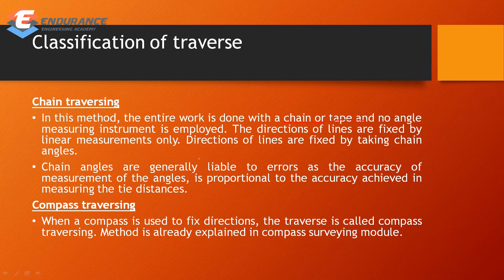In chain traversing, the direction of lines is fixed by taking chain angles — no angular measuring instrument is used. All measurements are done with chain and tape. The accuracy of chain traversing is proportional to the accuracy achieved in measuring the tying distances.